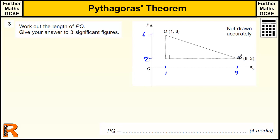So 9, 2. So this length is 8 because it's going from 1 to 9 and this length is 4 because it's going from 2 to 6. So if we want to work out this length of PQ,